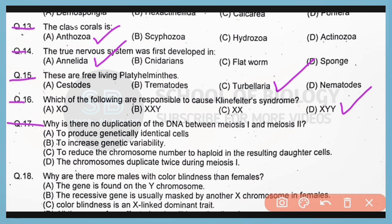Question 17. Why is there no duplication of DNA between meiosis 1 and meiosis 2? In order to reduce the chromosome number to haploid in the resulting daughter cells. Correct answer is option C.